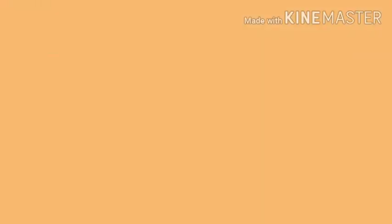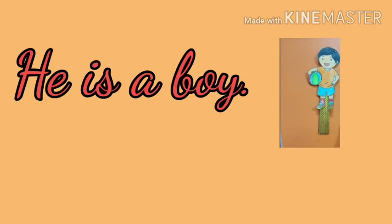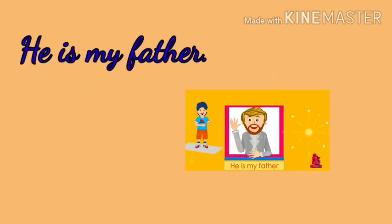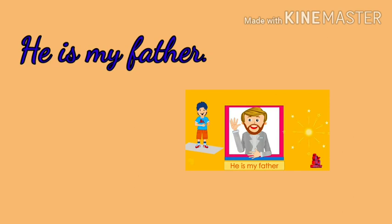For example, he is a boy. Here, for boy we are using he. Another example: he is my father. Father — again this is male. So we are using he. So whenever we are going to discuss regarding one male, we will use he.